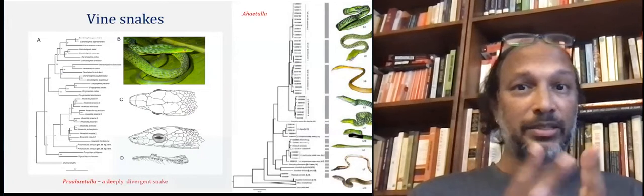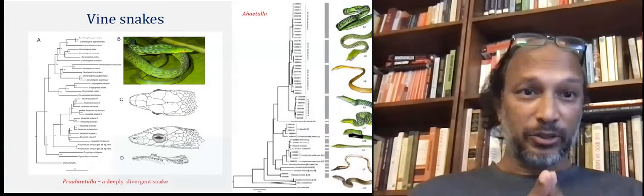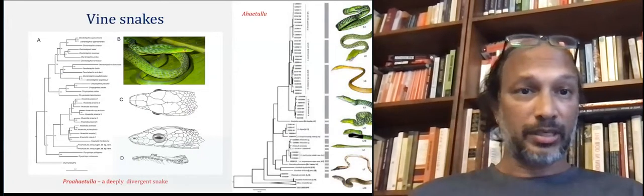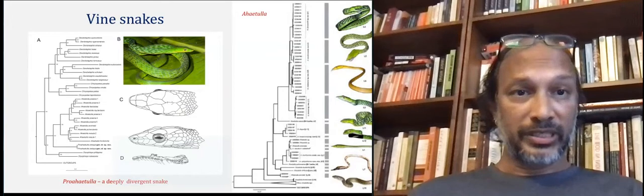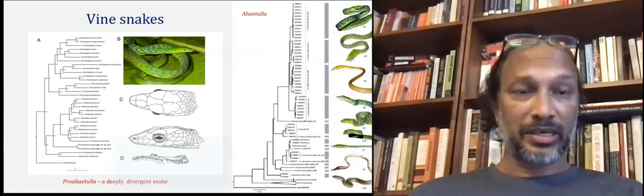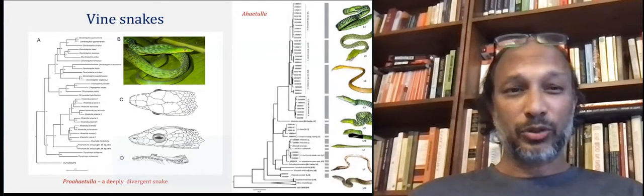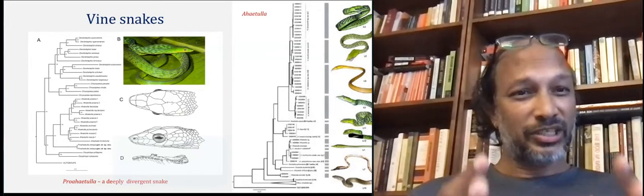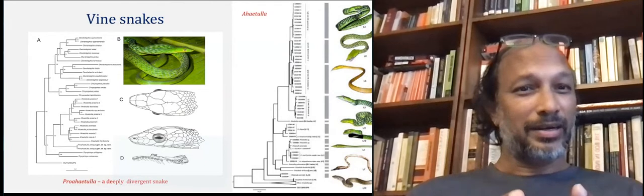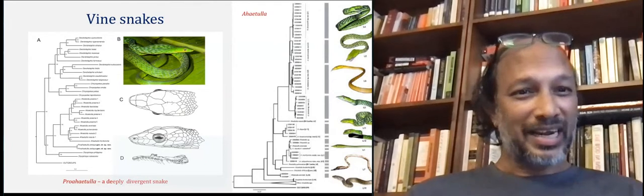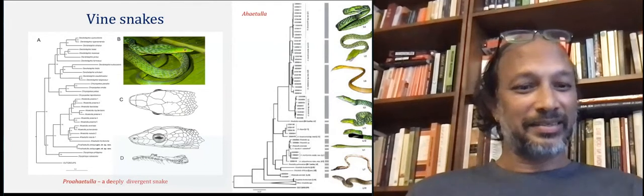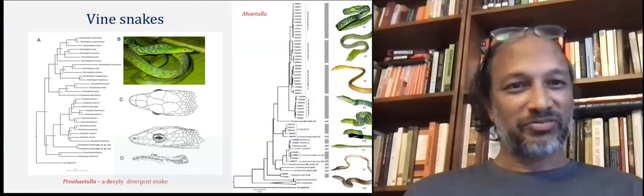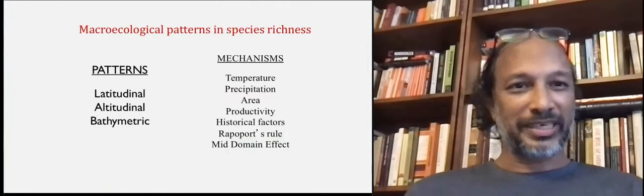Similarly with the vine snakes, we found several new species, but also a deeply divergent lineage — a new genus from the southern Western Ghats — which underscores what fascinating evolutionary history resides in that part of this very ancient mountain chain.